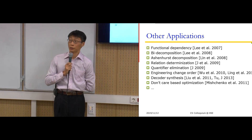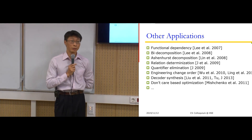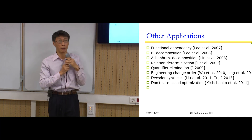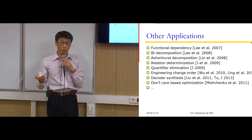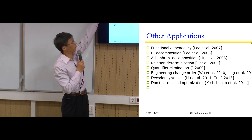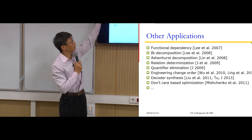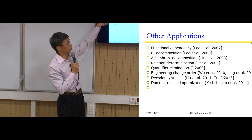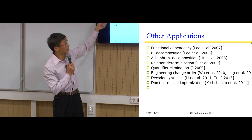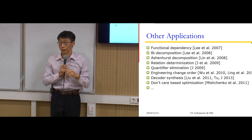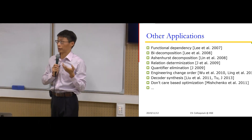In this presentation, I gave two examples of using Boolean satisfiability in logic synthesis. There are many different applications where Craig interpolation and SAT solving are useful: disjoint support decomposition, Ashenhurst decomposition, Boolean relation determinization, quantifier elimination, engineering change orders, decoder synthesis, and don't-care-based circuit optimization. All of these can benefit from using SAT and Craig interpolation.